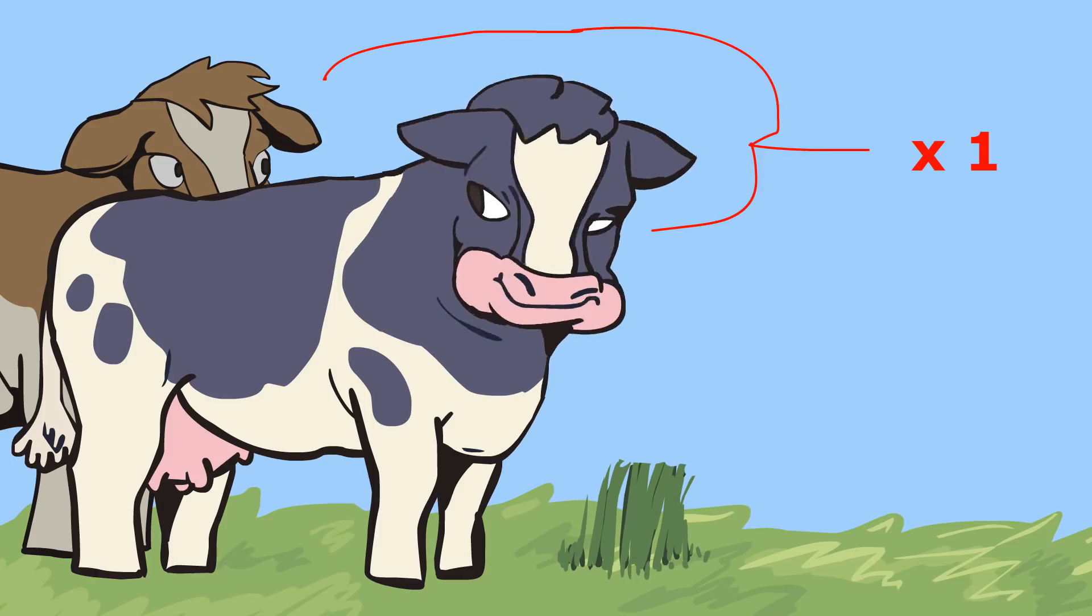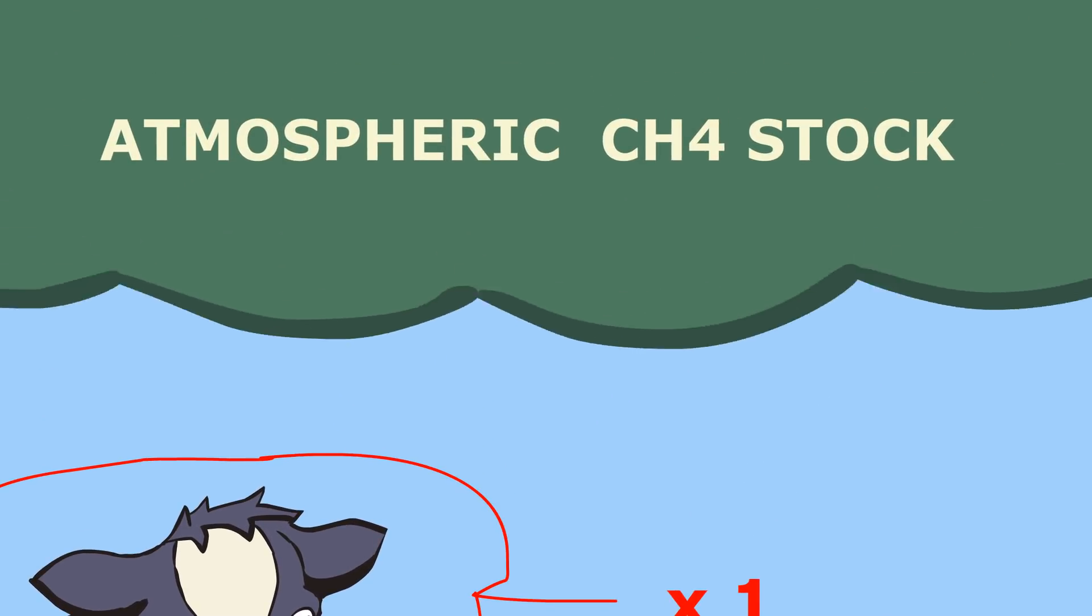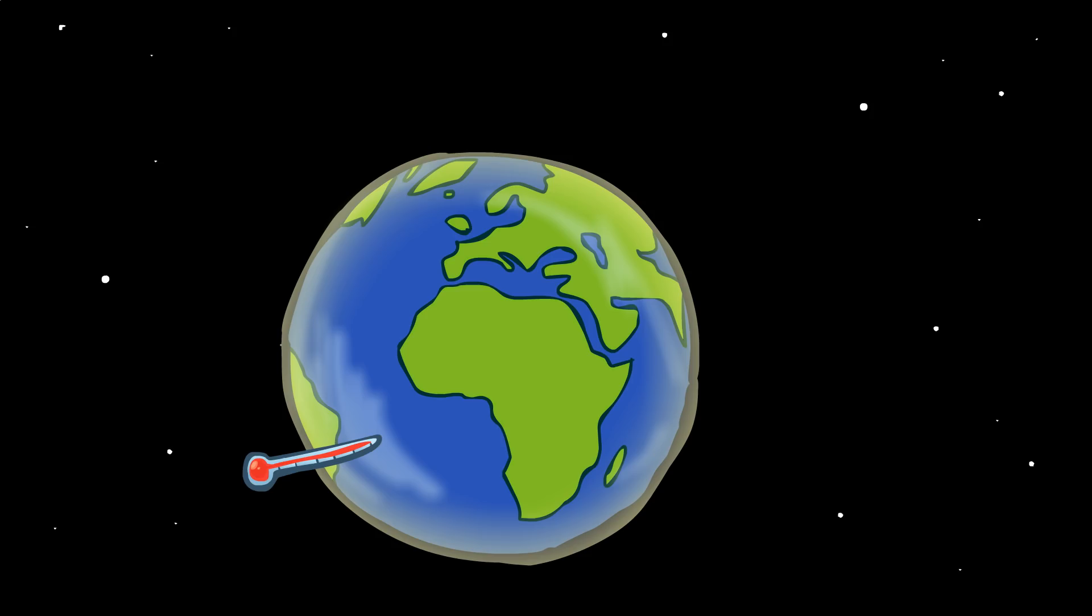As long as the number of livestock remain constant, their emissions do not cause the atmospheric concentration of methane to increase, and therefore do not cause the atmosphere to warm.